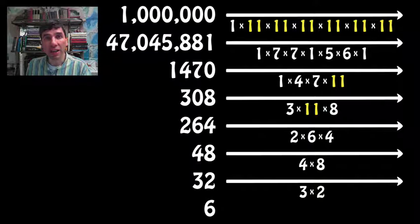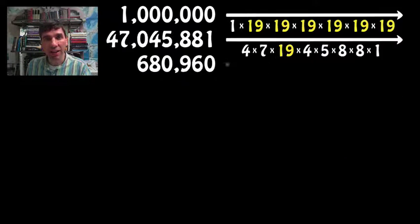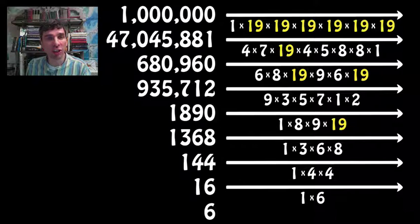If we choose a number larger than 11, let's say 19, then that took even longer to crash to a single digit. Again, just by chance, that digit happened to be 6.